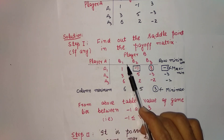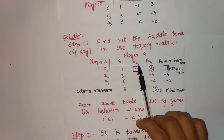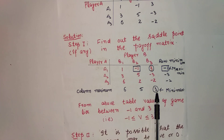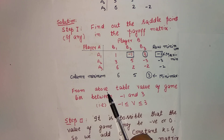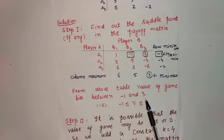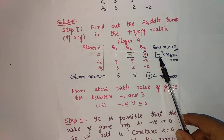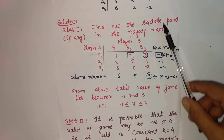Now we find the greatest element in each column, that is the column maximum. The column maximum in the first column is 6, in the second column is 5, and in the third column is 3. We then find the minimum among these maximum values — the minimum value is 3, so I encircle this 3, which is the minimax. From the above table, the value of the game lies between −1 and 3. That is, −1 ≤ V ≤ 3. This is our first step.